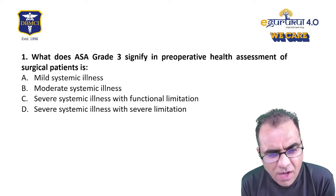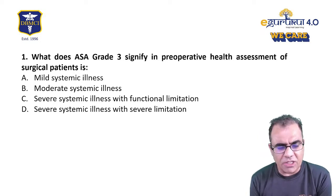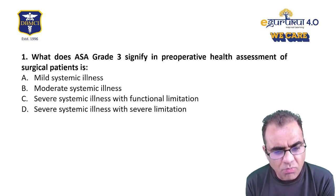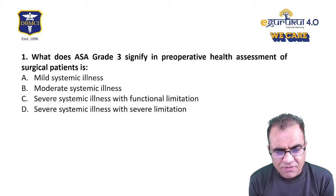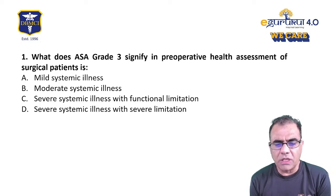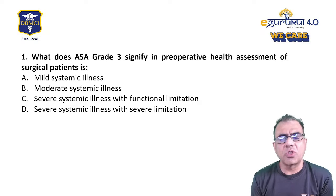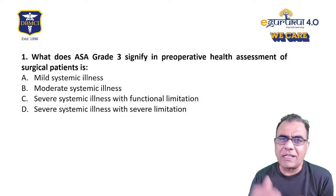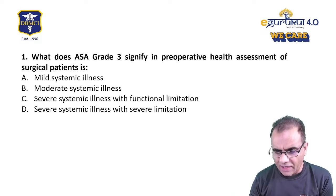Question number one: What does ASA grade 3 signify in pre-operative health assessment of surgical patients? Options: mild systemic disease, moderate systemic disease, severe systemic illness with functional limitation, severe systemic illness with severe limitation. ASA stands for American Society of Anesthesiologists, which has classified patients into six categories based on their medical condition.